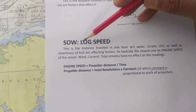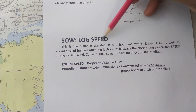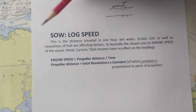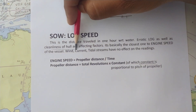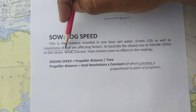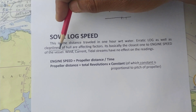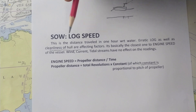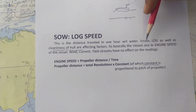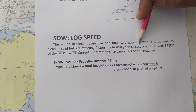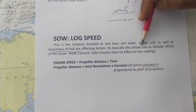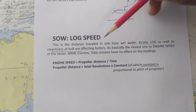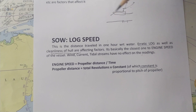Log speed can vary if there are any hull impurities — for example, barnacle growth — in which case the log speed will differ from engine speed. Also, if the log itself has an error, the reading will vary. Otherwise, the log will show you the speed of your engine.